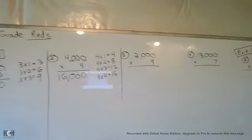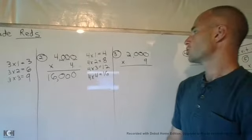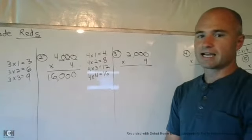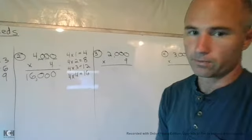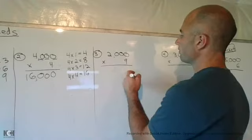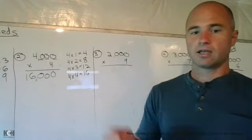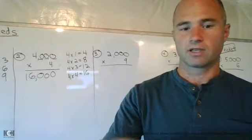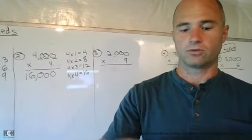All right, number 3, 2,000 times 9. So hit the pause button, and then we'll go over it momentarily. Hit that pause button in 3, 2, 1.